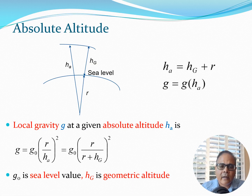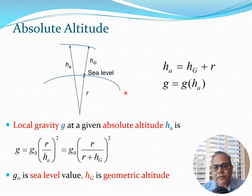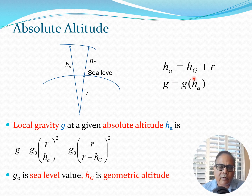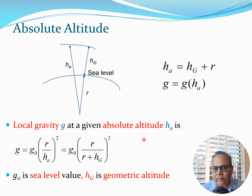From this picture, if we consider the Earth's surface at sea level, we have the radius of the Earth r, and we also have this distance hg. We can take a value from the center of the Earth to a point above the surface and call that h subscript a. From this diagram I can write: h_a = hg + r, where hg is the geometric altitude and h_a is the absolute altitude. These two are very important and are clear from the diagram shown here.